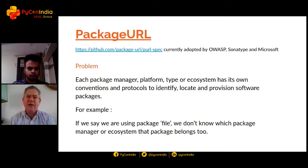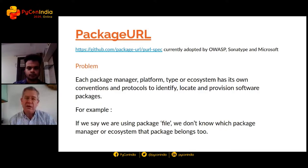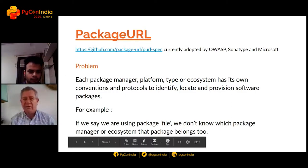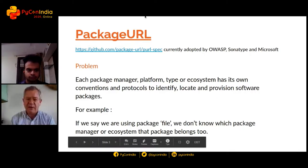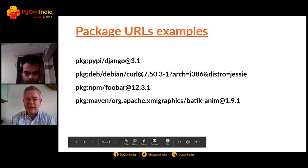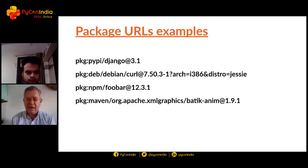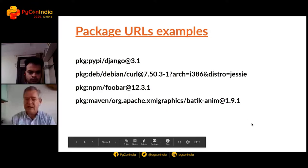To give an example, think about a package named 'file' - it's a very common name. It could be a package on PyPI, or libmagic (the command line utility used on Linux named 'file'), or 'file' as a node package on npm, or many different incarnations. So it's hard to know which package manager it belongs to. With Package URLs, we have a simple syntax: a 'pkg' prefix used as a scheme, then the type which is the ecosystem (PyPI, Debian, npm, etc.), then a name and a version.